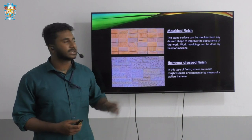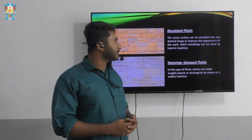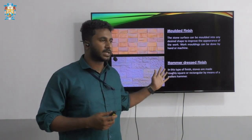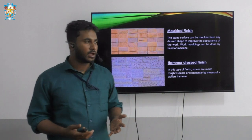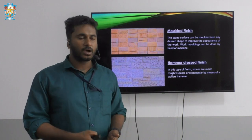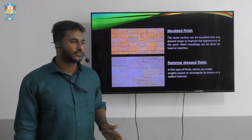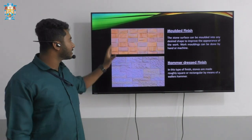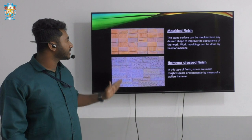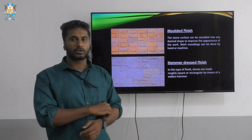Next we have the moulded finish. The stone surface can be moulded into different desired shapes to improve the appearance of the work. Mouldings can be done by hand or by machine. Looking at the picture, you can see the surface of the stones shaped and moulded into the same equally dressed rectangular shapes.